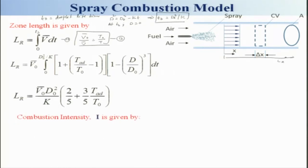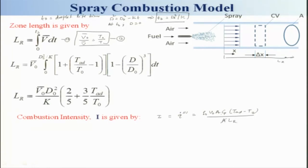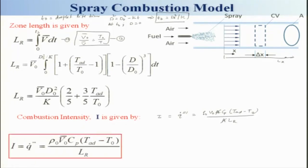The combustion intensity can be determined as: I = ρ₀·v₀·A·c_p·(T_ad − T₀) / (L_r · A). The area cancels, giving I = ρ₀·v₀·c_p·(T_ad − T₀) / L_r. Intensity varies inversely with the reactor length L_r, which ensures complete burning of the droplet.